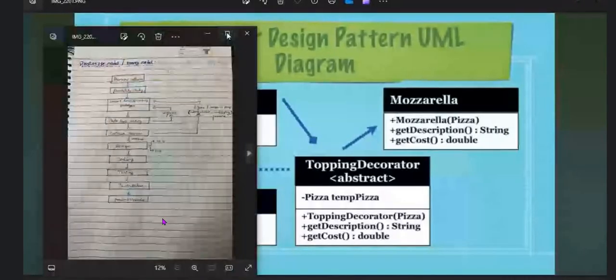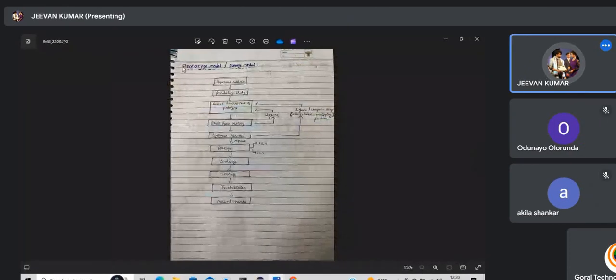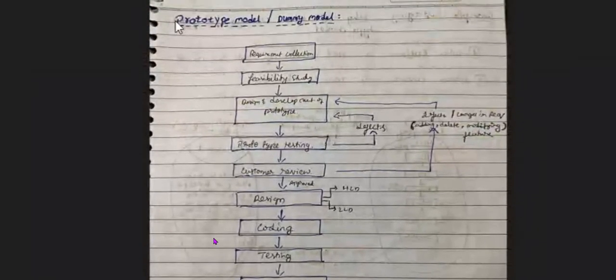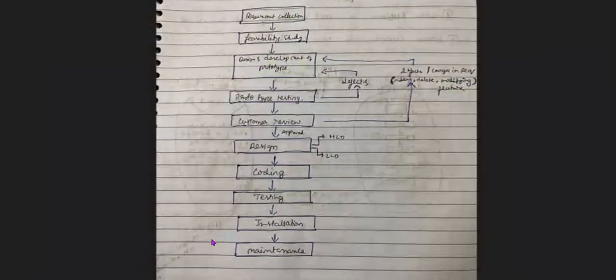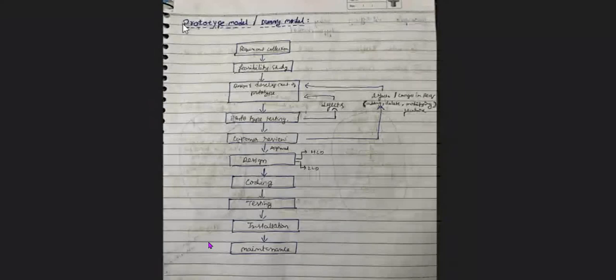In the waterfall model, once requirements are frozen they can't be changed. To overcome that, the spiral model was introduced, where each completed module is shown to the customer before moving to the next. V and V model also has some drawbacks. To overcome those drawbacks, we move to the prototype model.